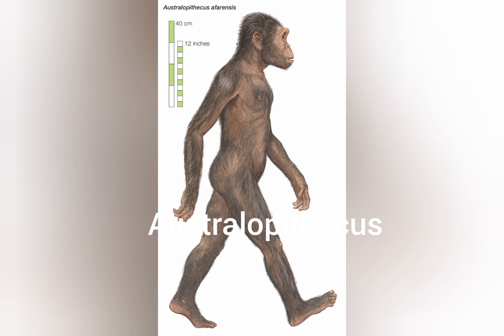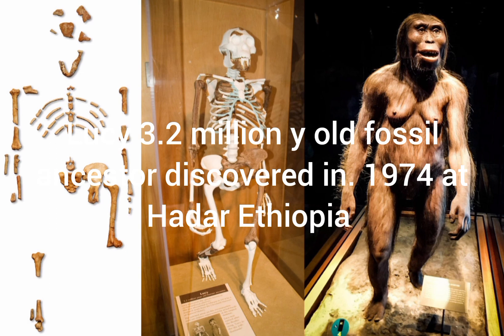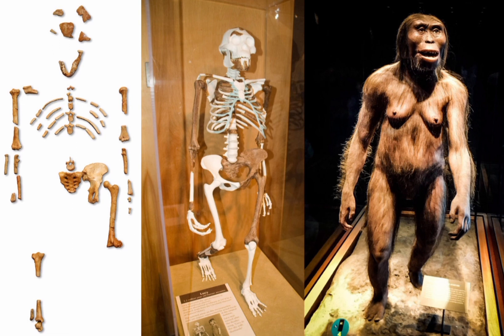Dryopithecus was followed by Australopithecus, which were around 1.2 meters tall and could walk upright, having a straight backbone. Australopithecus existed mostly in the early Pliocene period, between 5.8 million and 4.4 million years ago, and walked on two legs rather than four. They also lived in trees and maintained large jaws and teeth like those of apes. Lucy, a 3.2 million year old fossil skeleton, was discovered in 1974 in Hadar, Ethiopia.